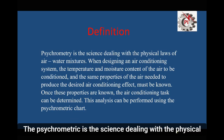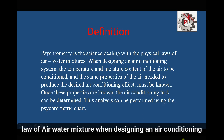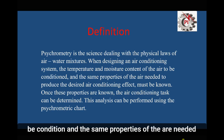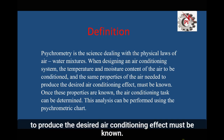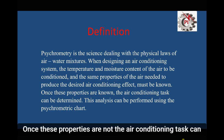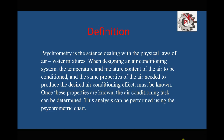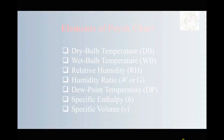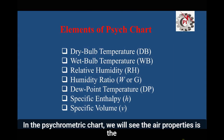Psychrometrics is the science dealing with the physical laws of air-water mixtures. When designing an air conditioning system, the temperature and moisture content of the air to be conditioned, and the properties of the air needed to produce the desired air conditioning effect, must be marked. Once these properties are known, the air conditioning task can be determined using the psychrometric chart.